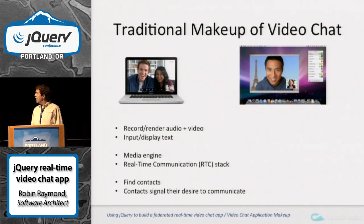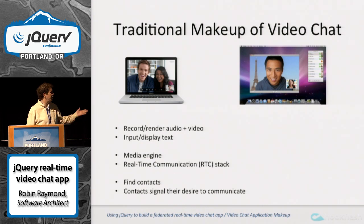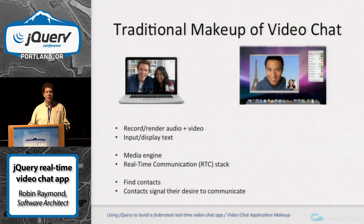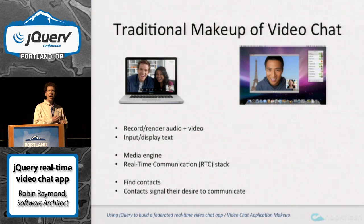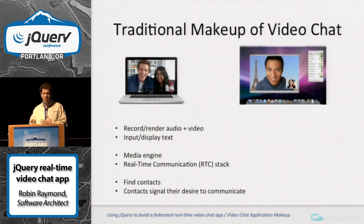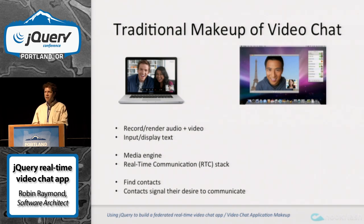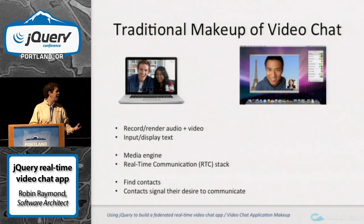Traditionally a video chat application consists of recording and rendering audio and video. You also have texting involved, so you need a media engine so that you can actually process all this audio data. You need a real-time communication stack so that you can send the media from one location to the other in real time. And obviously you need a mechanism to find your contacts and to signal your intention to communicate to a contact.